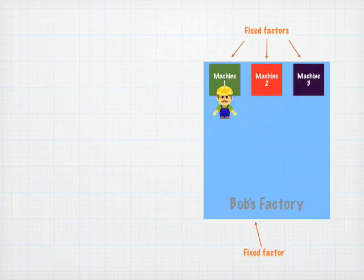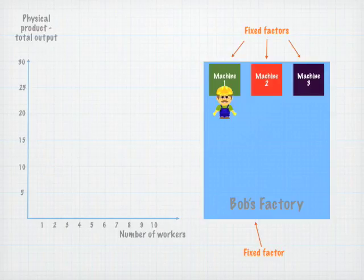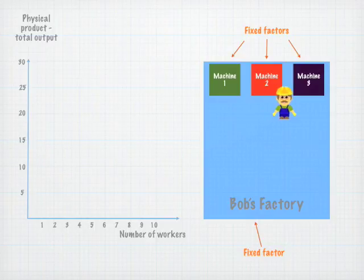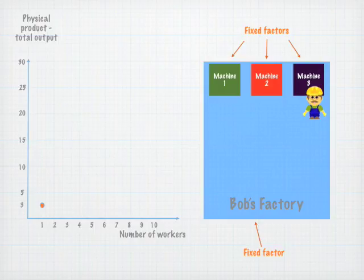In this example, we will plot the total output of the firm against the number of workers employed. Let's assume that production requires the use of all three machines. With one worker, total output is three units, and we can show this on our chart. A second worker means that machinery can be used more efficiently — when the first worker is not using a machine, our second worker can. The addition of the second worker means that total production increases to ten.